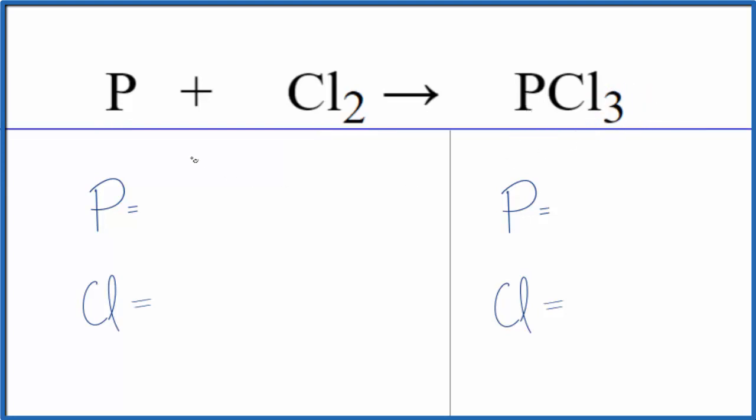Let's count the atoms up and balance the equation. We have one phosphorus and two chlorine atoms on the reactant side. Product side, one phosphorus and three chlorine atoms.